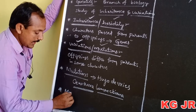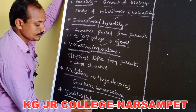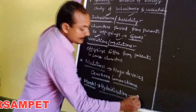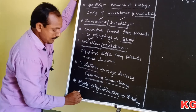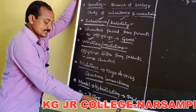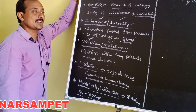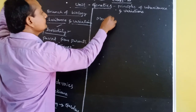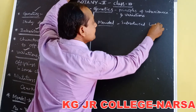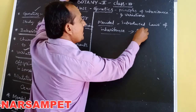Gregor Johann Mendel conducted hybridization experiments on garden pea plants for seven years and introduced the laws of inheritance. Hence, Mendel is regarded as the father of genetics.